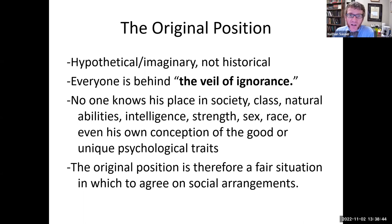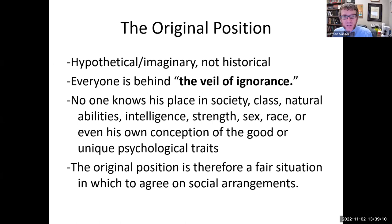So in this original position, everyone is behind what Rawls calls a veil of ignorance. That is, no one knows his own place in society, no one knows their own social class, their own natural abilities, their own intelligence level, their own strength level. You don't even know what sex you are, what race you are, or even your own conception of what a good life is. You don't know your own psychological traits.